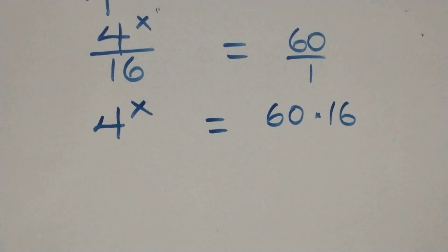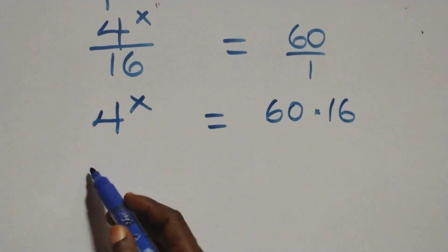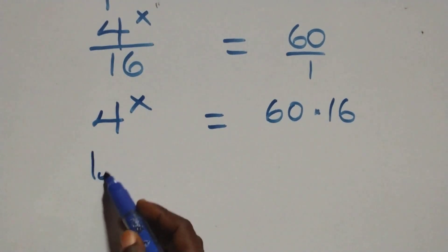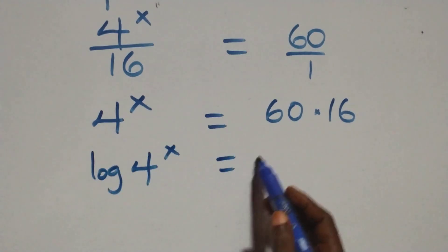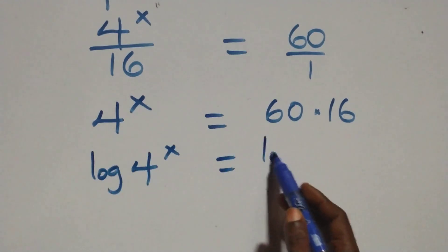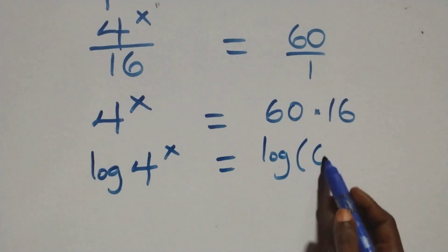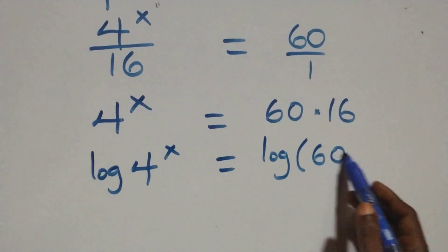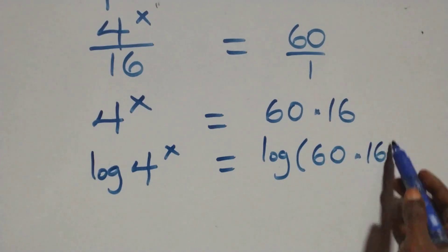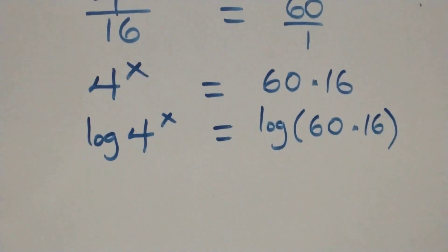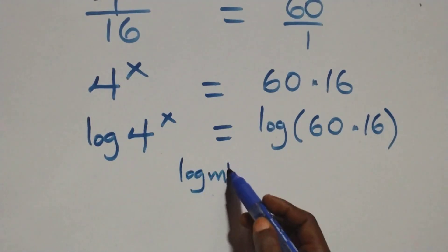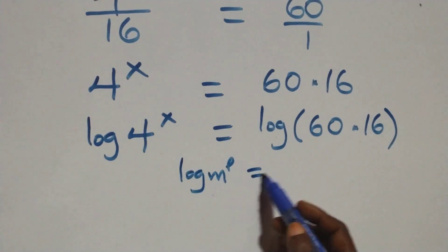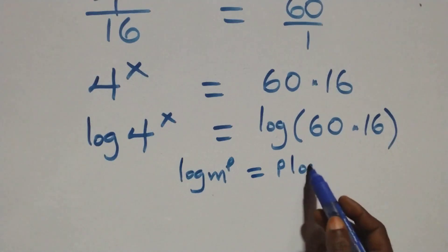The next step, we take the log on both sides. That is, we have log of four raised to power x equals log of sixteen times sixteen. Then we apply the power law of logarithm: when we have log n raised to power p, that is the same as p log n.